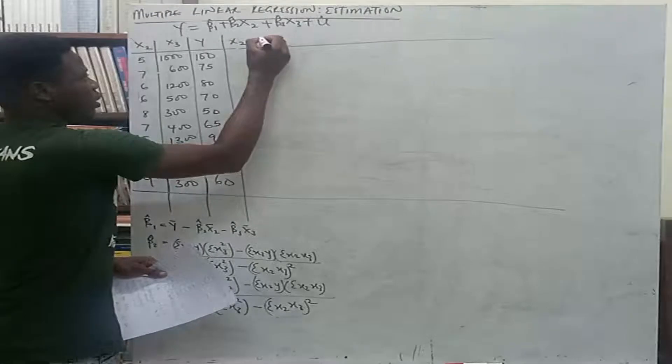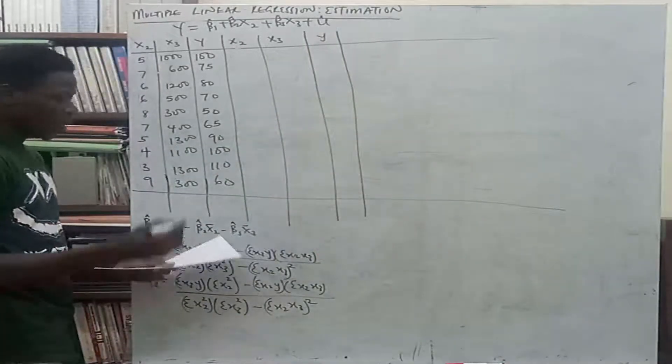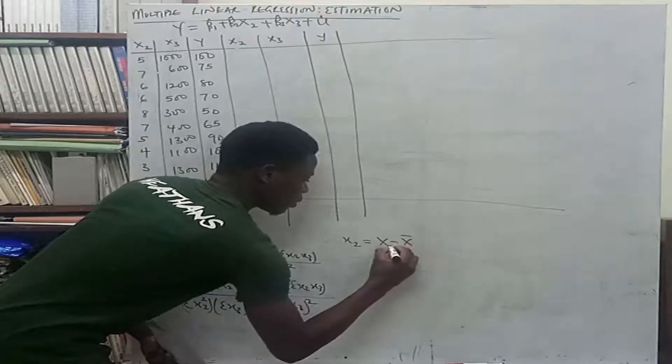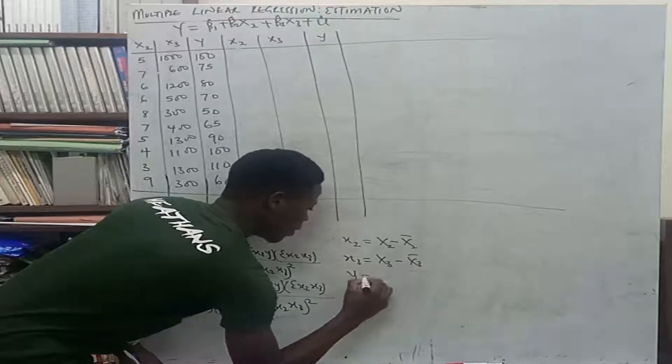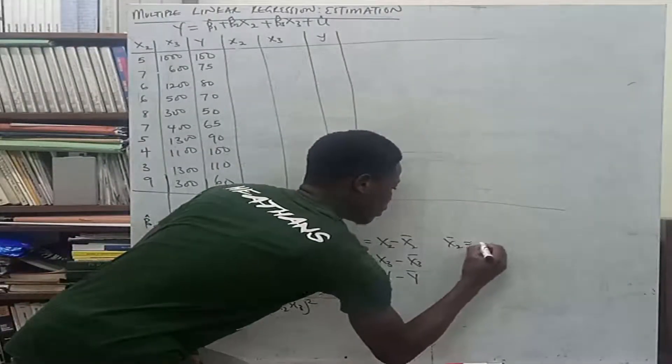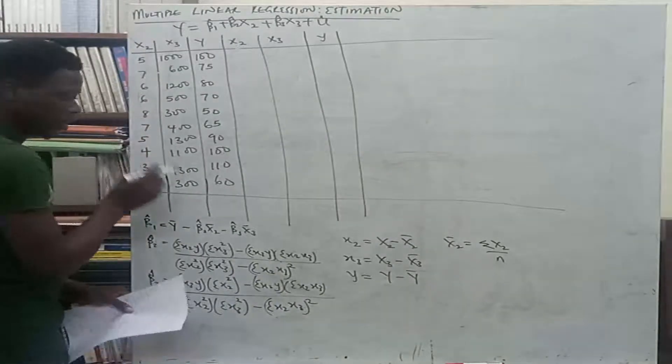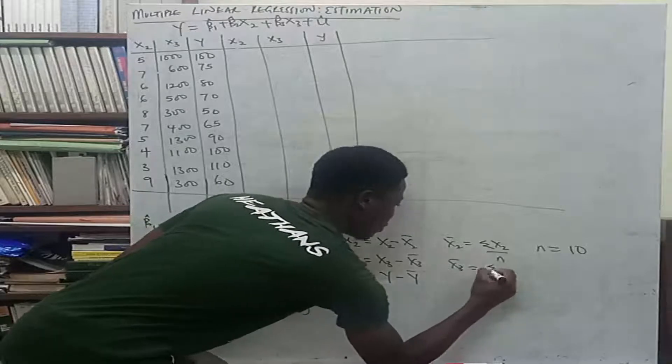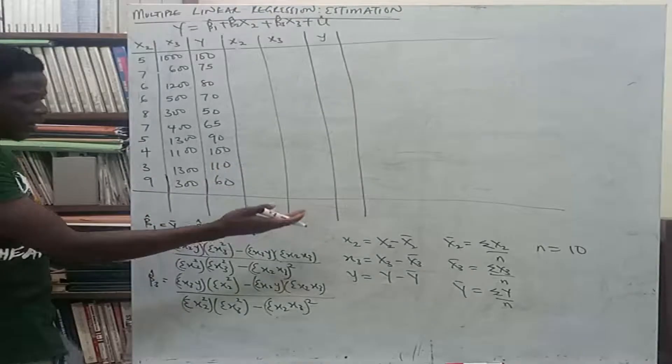For the x2, small letter x2, that is big X2 minus the mean of x2. For your x3, big X3 minus the mean of x3. For your y, big Y minus the mean of y. How do we get the mean of x2? The mean of x2 is the summation of x2 over n. N is the number of observations we have. When you count one, two, three, four, five, six, seven, eight, nine, and ten, that's n. So n here equals 10. For x3 bar, that's the summation of x3 over n. For y bar, that's the summation of y over n.